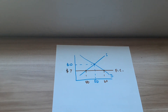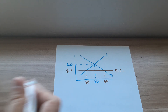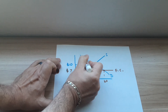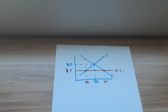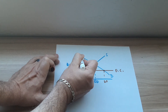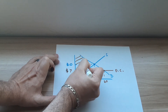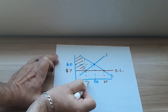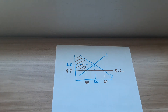Consumer surplus, again, is the area below the demand curve but above the price. We have to stay within the quantity, which with the price ceiling is 40 units. I'm going to trace up to where the 40 units are so that we can stay within the quantity. So below the demand curve, above the price of $7, and staying within the quantity of 40 units — all of this area here is your consumer surplus.